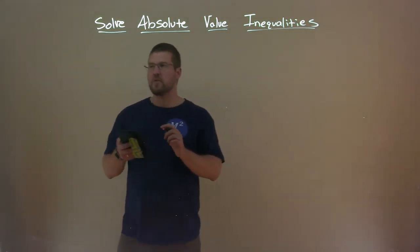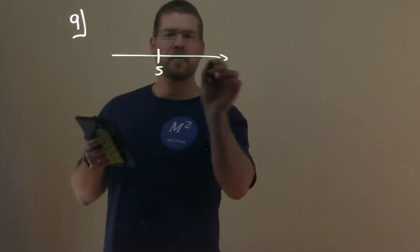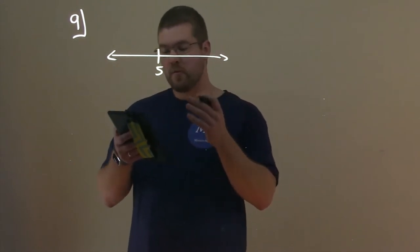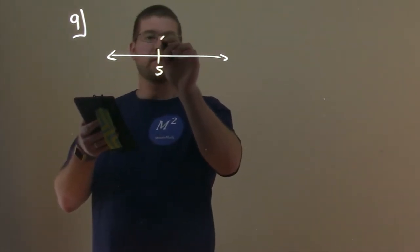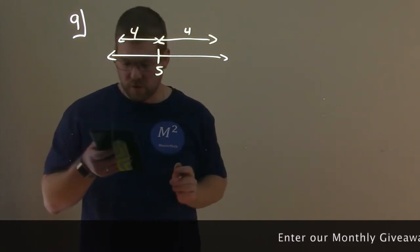Let's go with our first example, number 9. They ask us: describe all values of x within a distance of 4 from the number 5. So all values of x within a distance of 4 from the number 5. If we had a number line with 5 on it, the distance above 5 is 4 units and below 5 has to be 4 units.